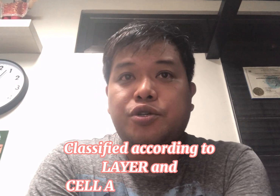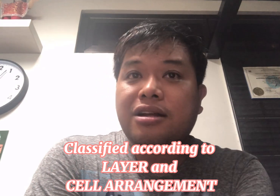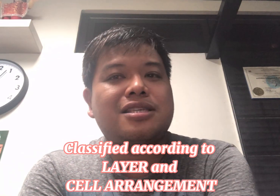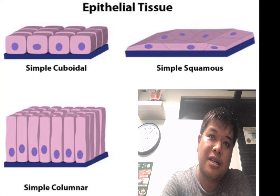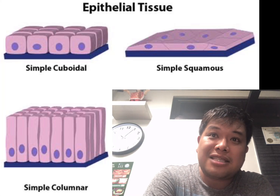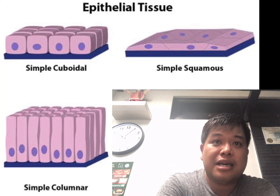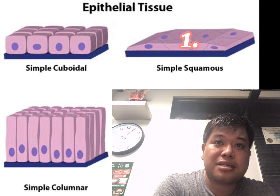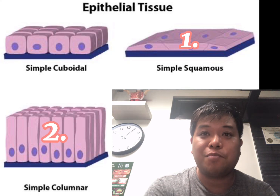Tissues are formed to cover the surfaces of the body. These are located both in internal and external parts. They are classified according to layer and based on the cell's arrangement. The epithelial tissue is classified into three types: squamous, columnar, and cuboidal.